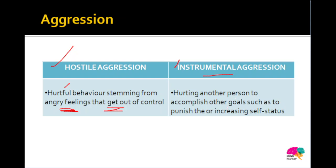Instrumental aggression is when you hurt another person in order to accomplish your goal. You may not be very angry, but you have a goal in mind — to punish that person, to increase your own status, or to protect yourself or your country. So to achieve such goals, you hurt the other person. That counts as instrumental aggression because you are hurting another person to achieve a goal.